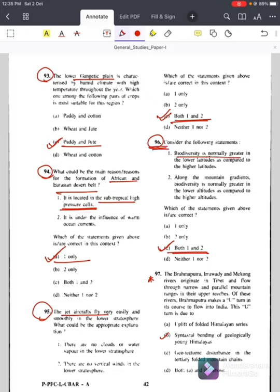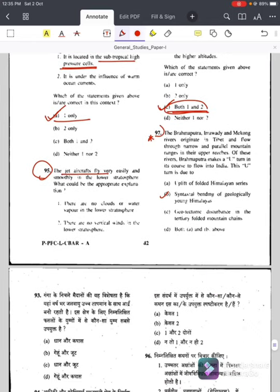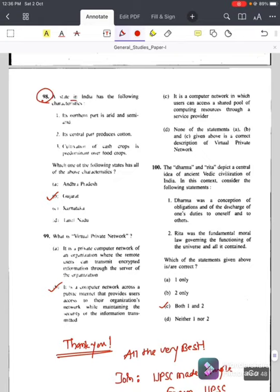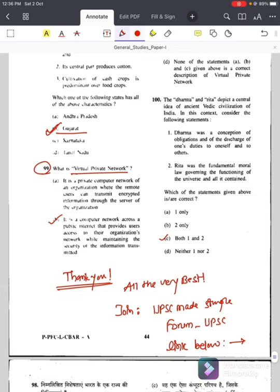Question ninety-six with respect to biodiversity, answer is C, both one and two. Question number ninety-seven, again this is again very, very important question because many people, even some faculties of geography or so many experts, they don't agree with this answer, but this is UPSC official answer key. The Brahmaputra, Irrawaddy and Mekong rivers originate in Tibet and flow through narrow and parallel mountain ranges in their upper reaches. Of these rivers, Brahmaputra makes a U-turn in its course to flow into India. This U-turn is due to, answer is B, syntaxial bending of geologically young Himalayas. Answer is B, syntaxial bending of geologically young Himalayas.